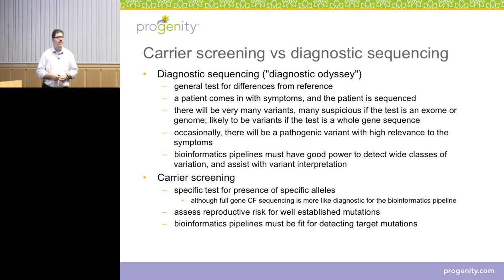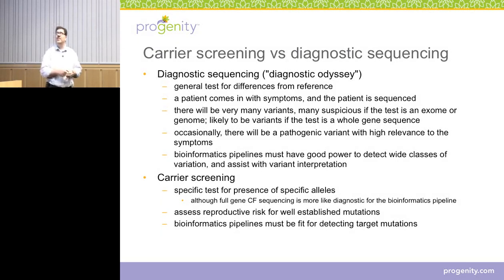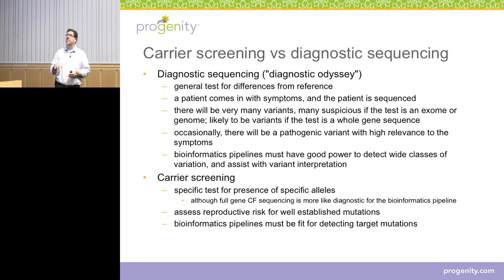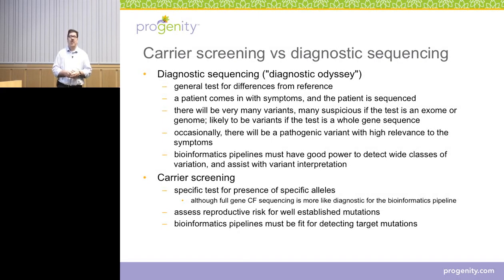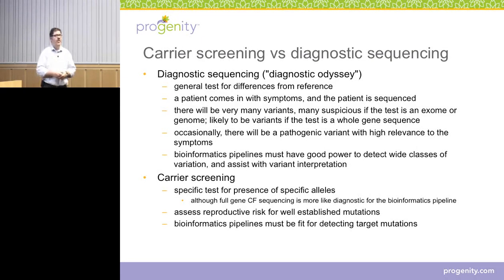Most of the time when people think about clinical sequencing, they're thinking about this sort of diagnostic odyssey, and this is really different from what we're doing. A diagnostic odyssey is really just a general test for differences from the reference in a sample. A patient will come in with specific symptoms that indicate genetic testing might be helpful, and then you sequence the patient's genome — this might be a whole genome sequence, an exome, or depending on the physician and the indications, a panel. You then analyze data to find variants, and there will be a lot of them. Especially if you're doing an exome or whole genome, you'll find a lot of variants, and many of them will be very suspicious — they'll seem like they might be pathogenic.